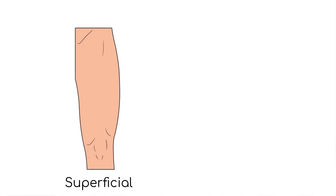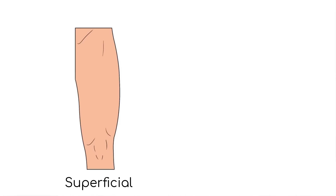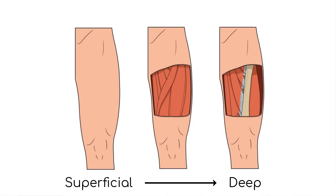Finally, we have two terms that help us describe depths within the body. If something is superficial it's close to the surface, and if something is deep it's hidden inside the body, underneath other tissues. For example, the skin is the most superficial layer of the thigh and the bones are the deepest layer. In between are the muscles, which are deep to the skin but superficial to the bones.